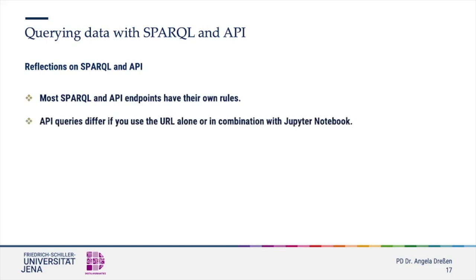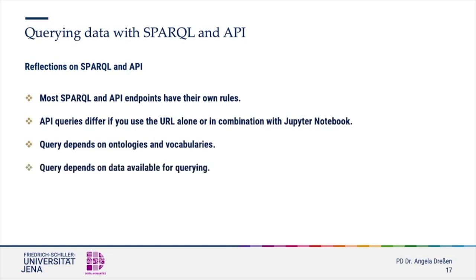We have also seen that API queries follow different approaches when using the API string with the URL, or when used with mediating engines like Jupyter Notebook that comes with a set of applications. Jupyter Notebook helps to build more complex queries. Vocabularies for API queries are often not very refined, but they allow to frame a dataset which can be subsequently worked with. Your query depends on the granularity of the ontologies or vocabularies the individual endpoint provides. Another method to obtain data could also be web scraping, but this does not necessarily reach the internal database. The institutions prefer you to use their endpoints instead of scraping methods. Also bear in mind that many IIIF image providers increasingly offer images for API and SPARQL queries.